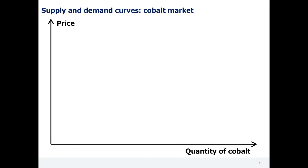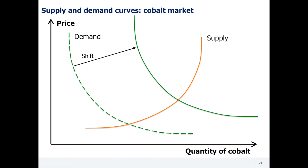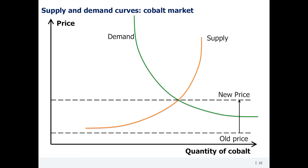It goes without saying that long-term shifts of demand and supply curves have the most dramatic impact on the market. Nowadays, electric cars are gaining a larger and larger share of the global auto fleet. One of the key elements of their rechargeable batteries is cobalt. The expected success of electric cars will trigger skyrocketing demand for this element, and the demand curve for cobalt will move significantly to the right, pushing the equilibrium price up.